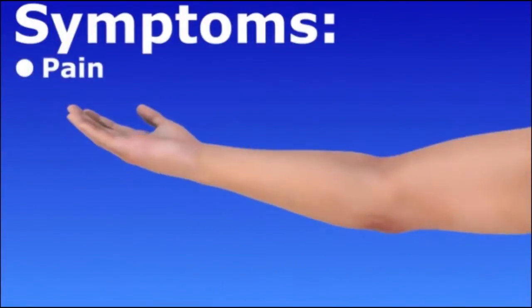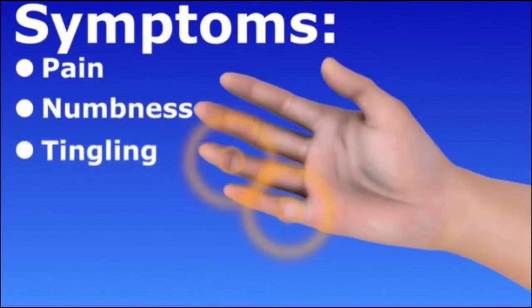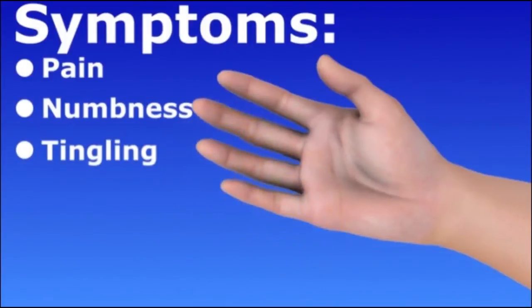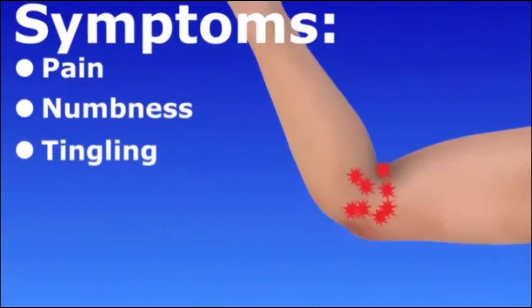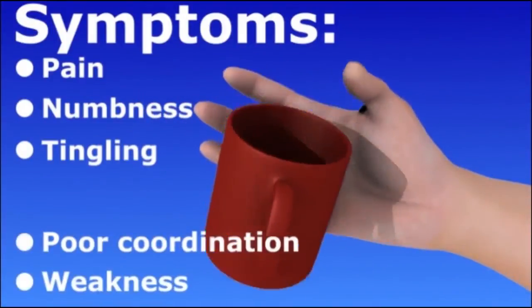You may experience numbness and a tingling sensation in your ring and little finger, feeling similar to when your funny bone is hit. Your symptoms may come and go and increase when your elbow is bent. You may also experience poor finger coordination and your grip and forearm may feel weak.